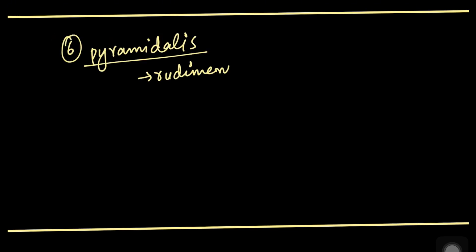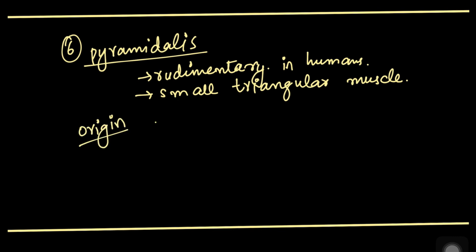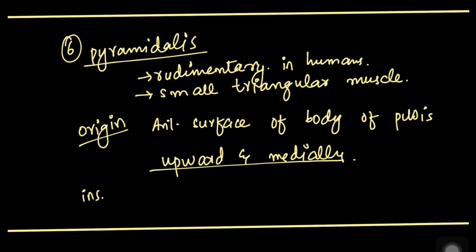Pyramidalis is the sixth muscle. It is basically rudimentary in humans, however we can study it. This is a small triangular muscle with origin on the anterior surface of the body of the pubis. The fibers run upward and medially with insertion on the linea alba.